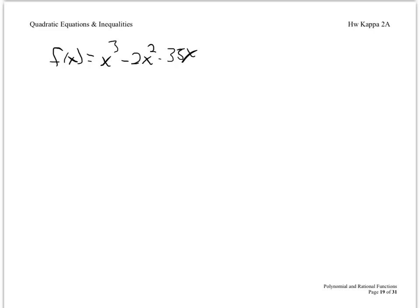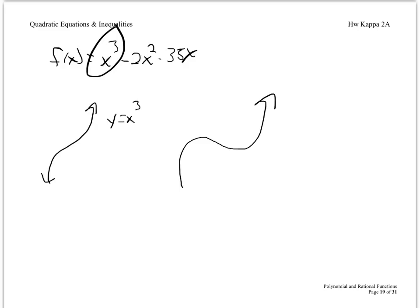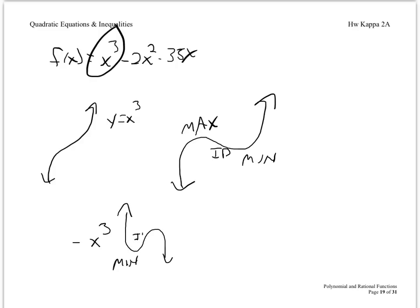The reason we know which is a minimum, which is a max: all we have to examine is the leading term, x cubed. The x cubed parent graph, when you add the other terms, it's as if you pulled the graph apart, giving a curve where from left to right we have a maximum first, then an inflection point, then a minimum. If the lead coefficient were negative, it would reflect the graph over the x-axis, giving a minimum first, then an inflection point, then a maximum.